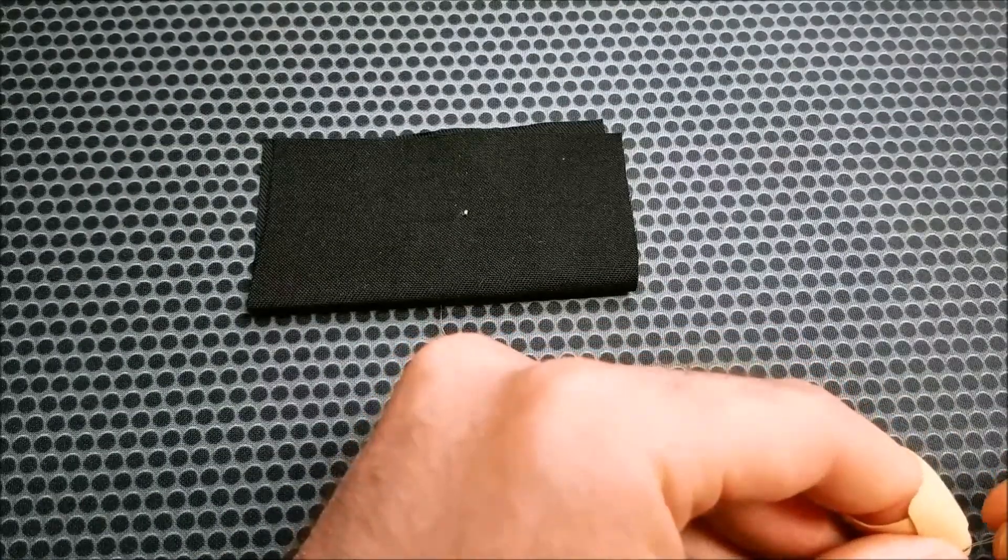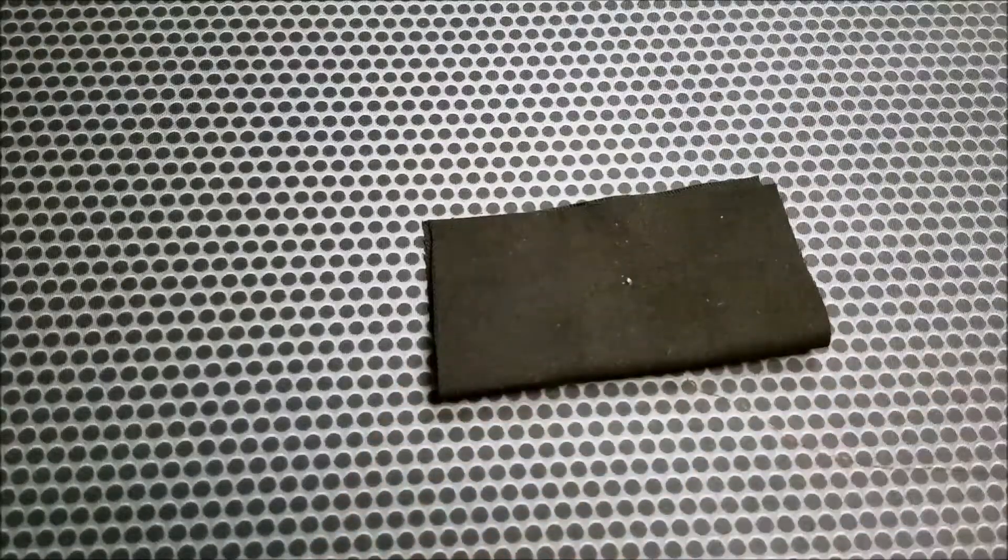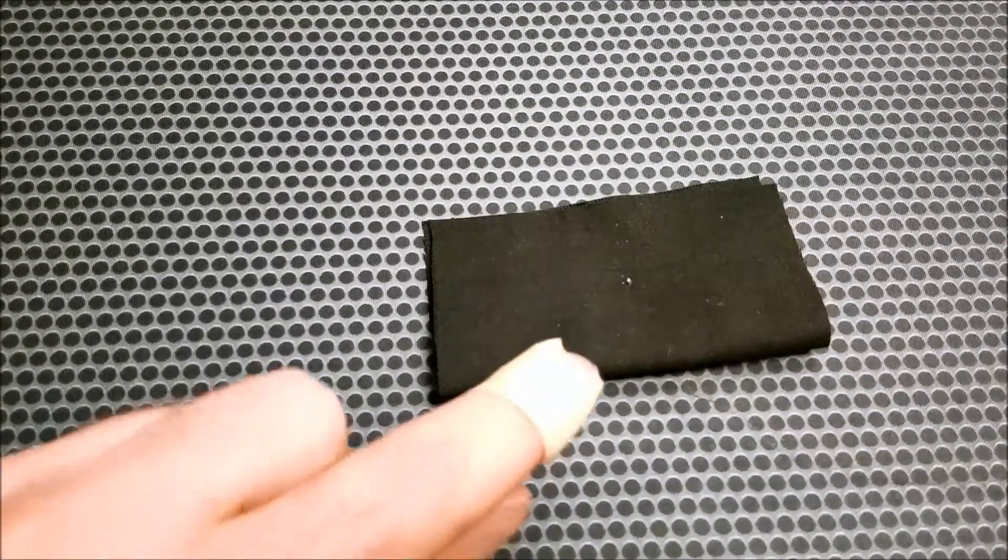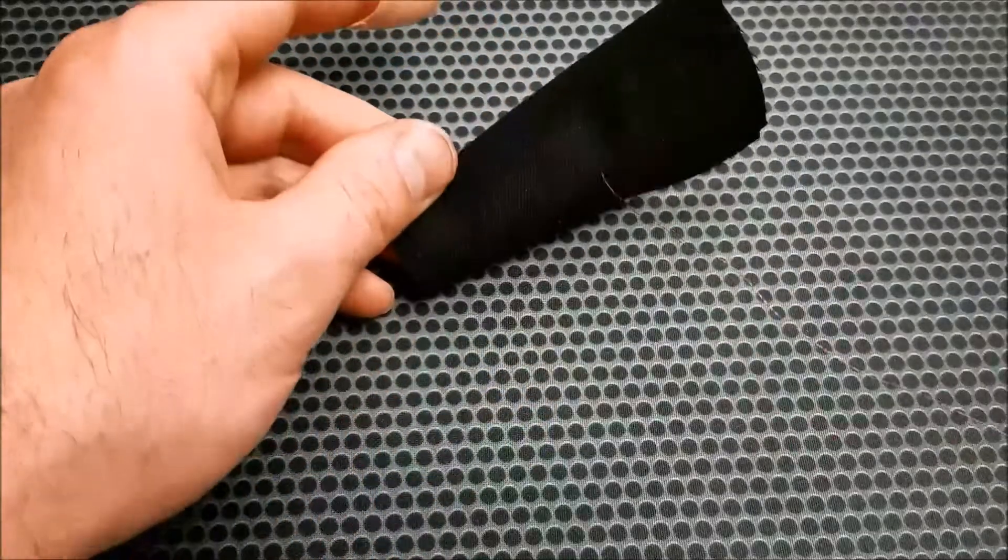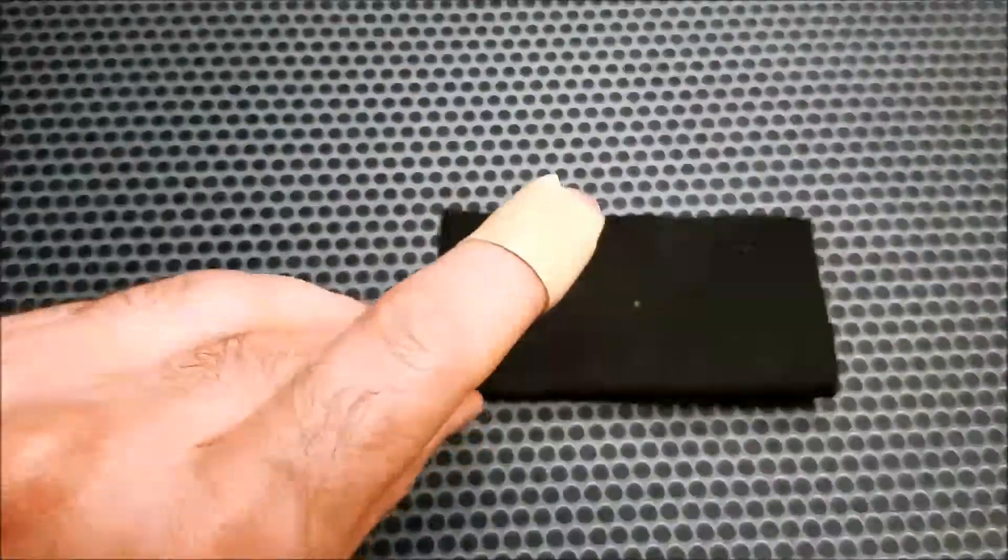Alright, so we've got the leads hooked up to the battery. You can see the LED is sewn into the fabric - it's going straight through. It's very, very small on the front; you could barely see it. If I didn't point it out, you probably wouldn't see it. And when you apply power, the LED lights up.